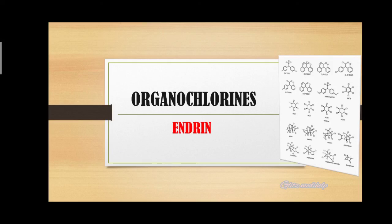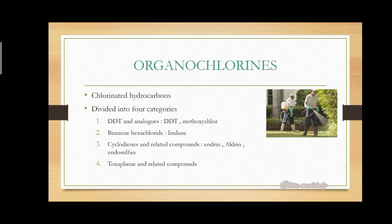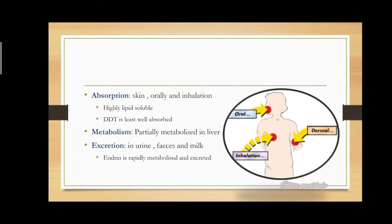Today's video is about organochlorins and a special discussion on endrin. Organochlorins are widely used as pesticides — they are chlorinated hydrocarbons divided into four categories: first, DDT and its analogs; second, benzene hexachlorides (example: lindane); third, cyclodienes and related compounds (which include endrin, endosulfan, and so on); and fourth, toxaphene and its related compounds.